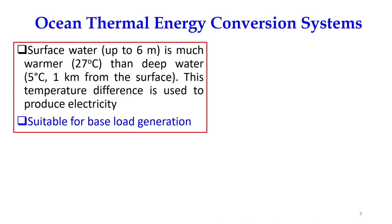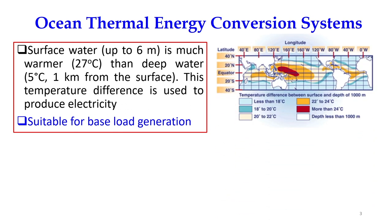These ocean thermal energy conversion systems are suitable for base load generation because there is not much fluctuation of temperature difference when installed at a particular site. We have studied the suitable sites for installation of this technology — it is most suitable within the latitude of 20 degrees north and 20 degrees south. Looking at this figure, color codes are used: red color indicates more than 24 degrees Celsius, followed by other colors representing lower temperatures.